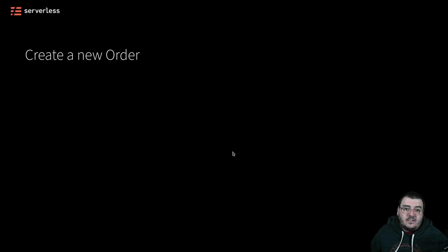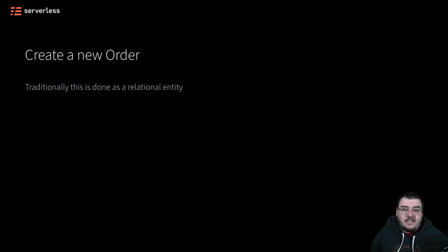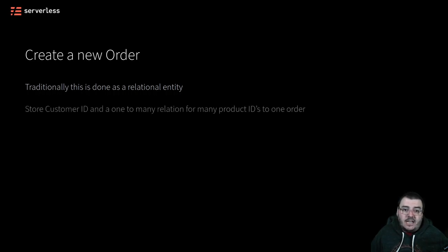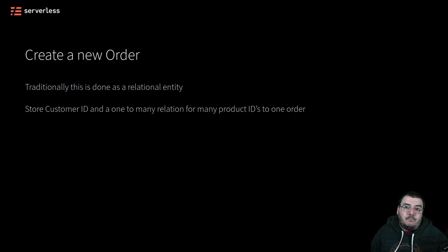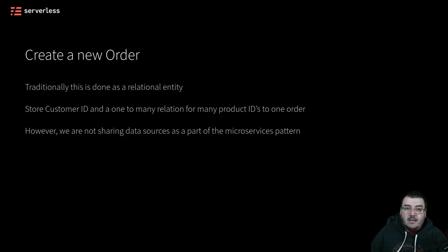Now let's consider the order service and go through the example flow for creating a new order. Traditionally, this would be an order table inside your database, and the order table would store the customer ID and the one-to-many relationship to product IDs — resolved at request time via a join query to the customer and product tables. But in our architecture, we are not sharing data sources across the service boundary. So we cannot have the order service make a request into the customer service's data table in order to resolve a customer record.